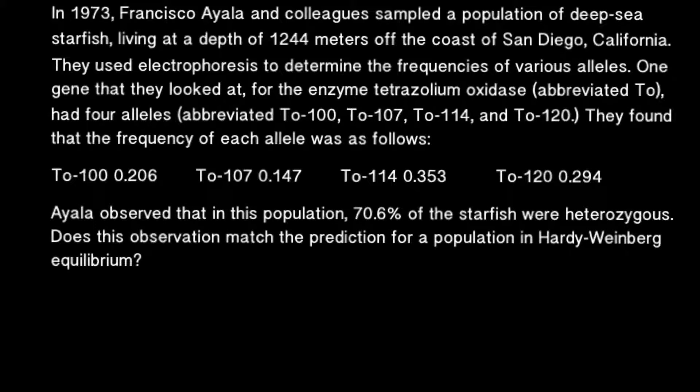Your textbooks usually have examples with only two alleles in the gene pool. Here is the problem: in 1973, Francisco Ayala and his colleagues sampled a population of deep-sea starfish living at a depth of 1,244 meters off the coast of San Diego, California. They used electrophoresis to determine the frequencies of various alleles.